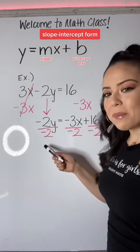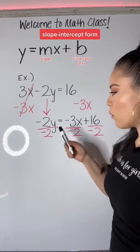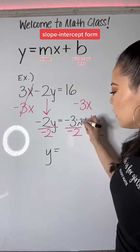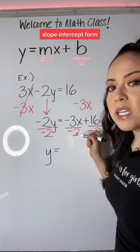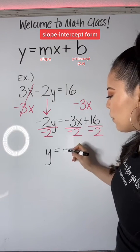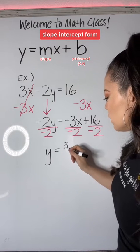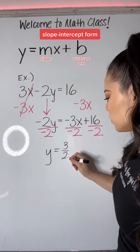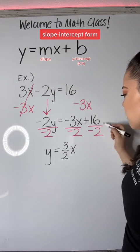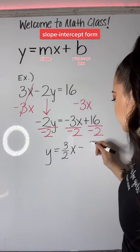Negative 2 divided by negative 2 is positive 1y. We can bring that down. Here we're going to have a fraction, and that is okay. A negative divided by a negative will be a positive answer, and 3 over 2 is just 3 over 2, so x, and then positive 16 divided by negative 2 is negative 8.